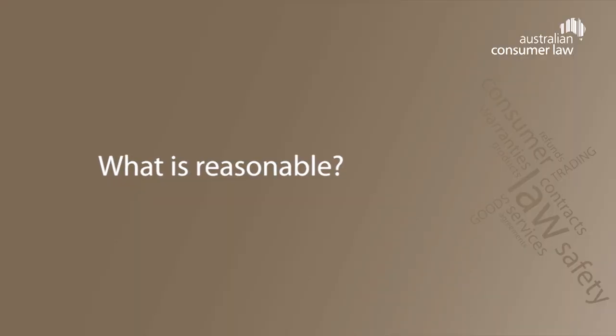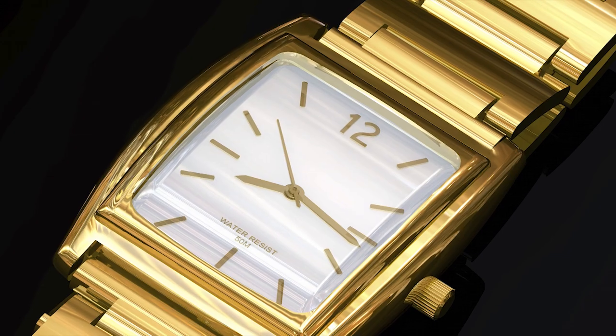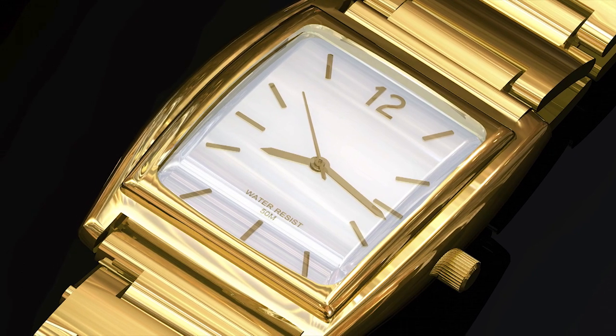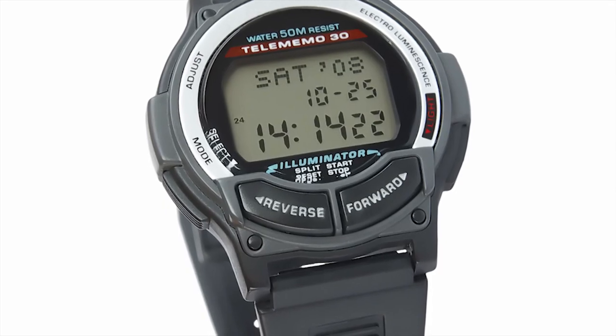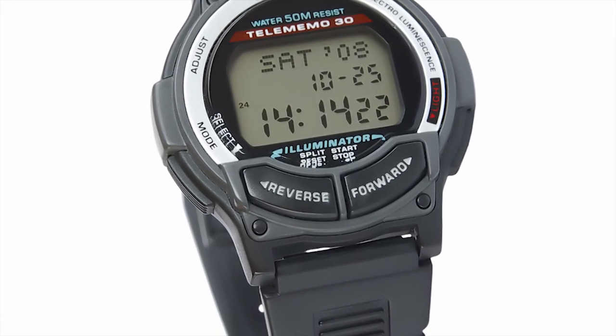Another definition to be aware of throughout the video is the term 'reasonable'. I might refer to using a product in a reasonable manner, or that a product should last a reasonable amount of time. What exactly is reasonable? It really depends on the circumstances — the goods, the services, and every individual thing that happened in those circumstances. It can only really be determined by a court, though you can apply a common sense approach. For example, it might be reasonable to expect that a $2,000 watch lasts longer than 18 months, but if you bought a watch that was only $5, you might expect it to only last a few months.